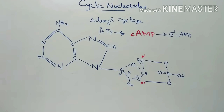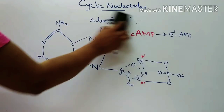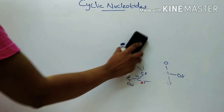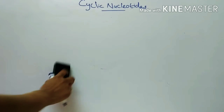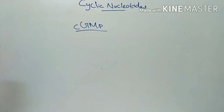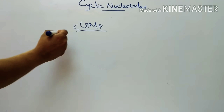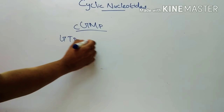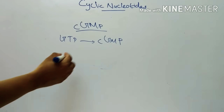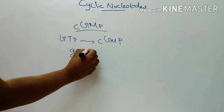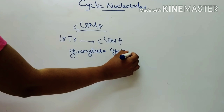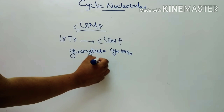Next we will see cyclic GMP. Cyclic GMP is made from GTP by the enzyme guanylate cyclase. This enzyme requires the presence of Mn2+.